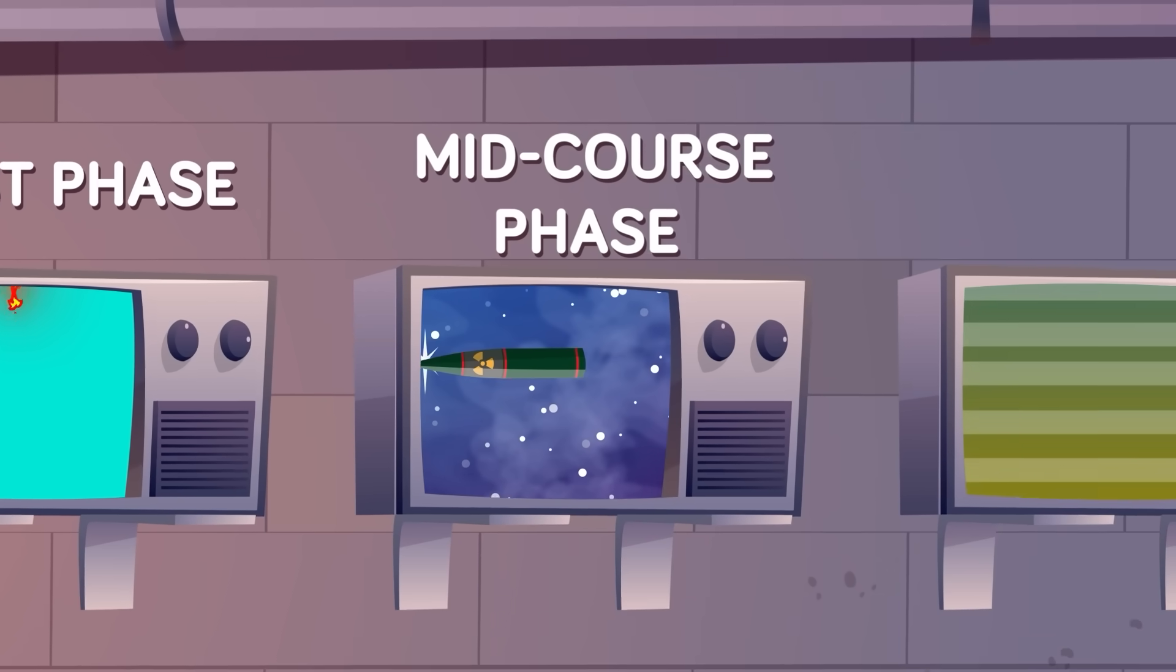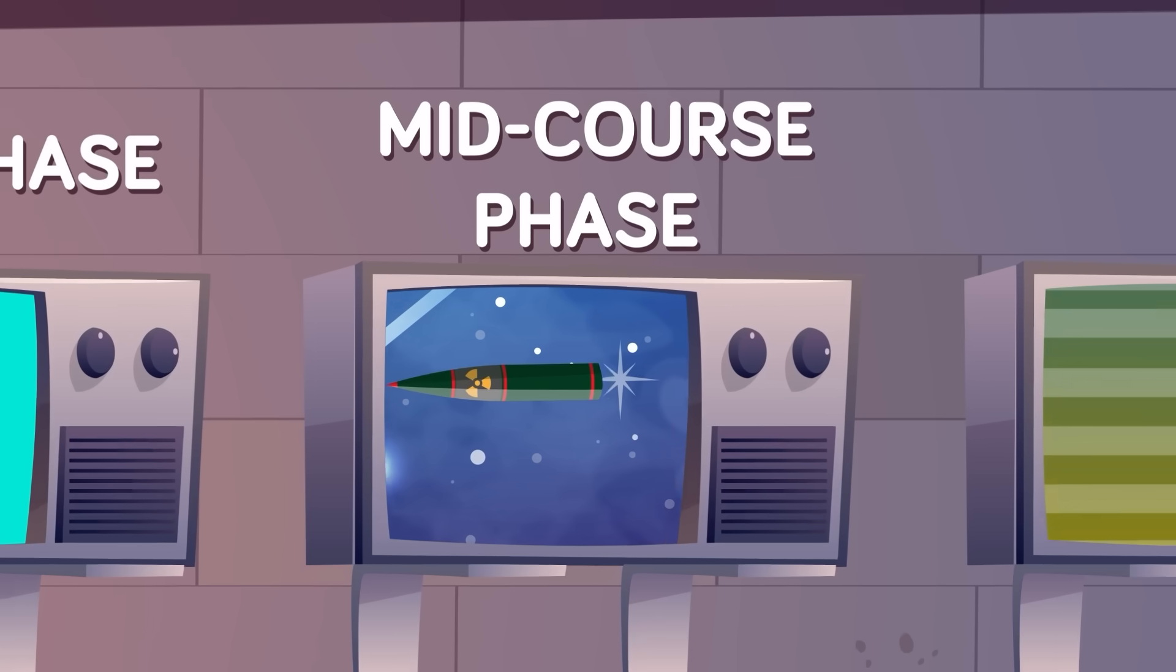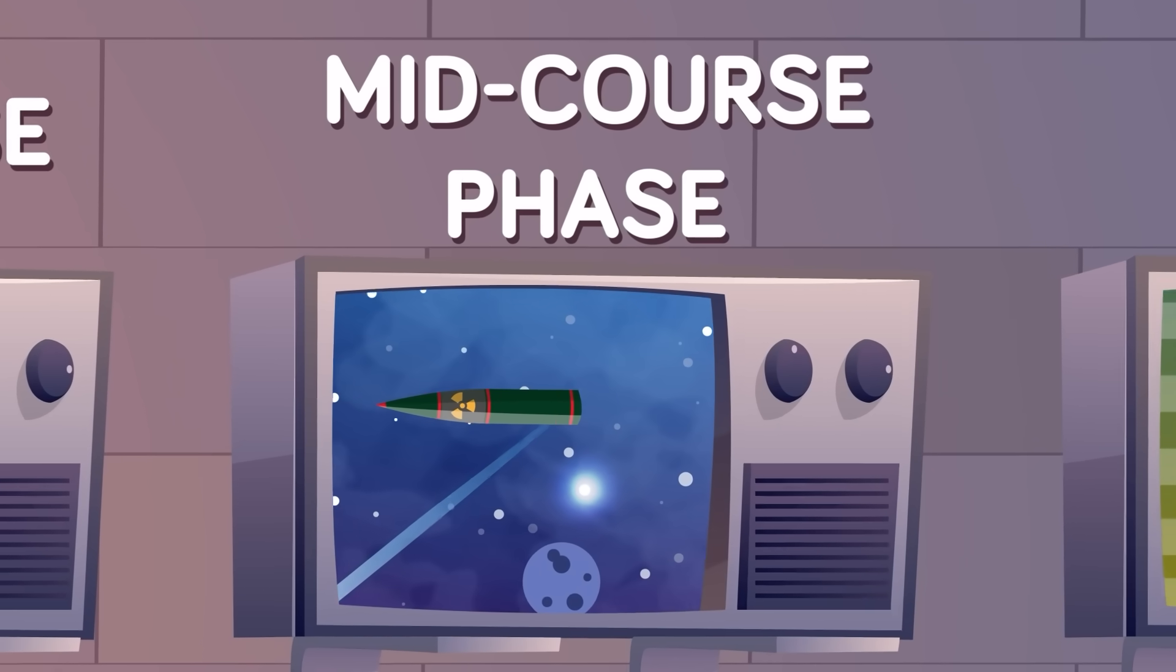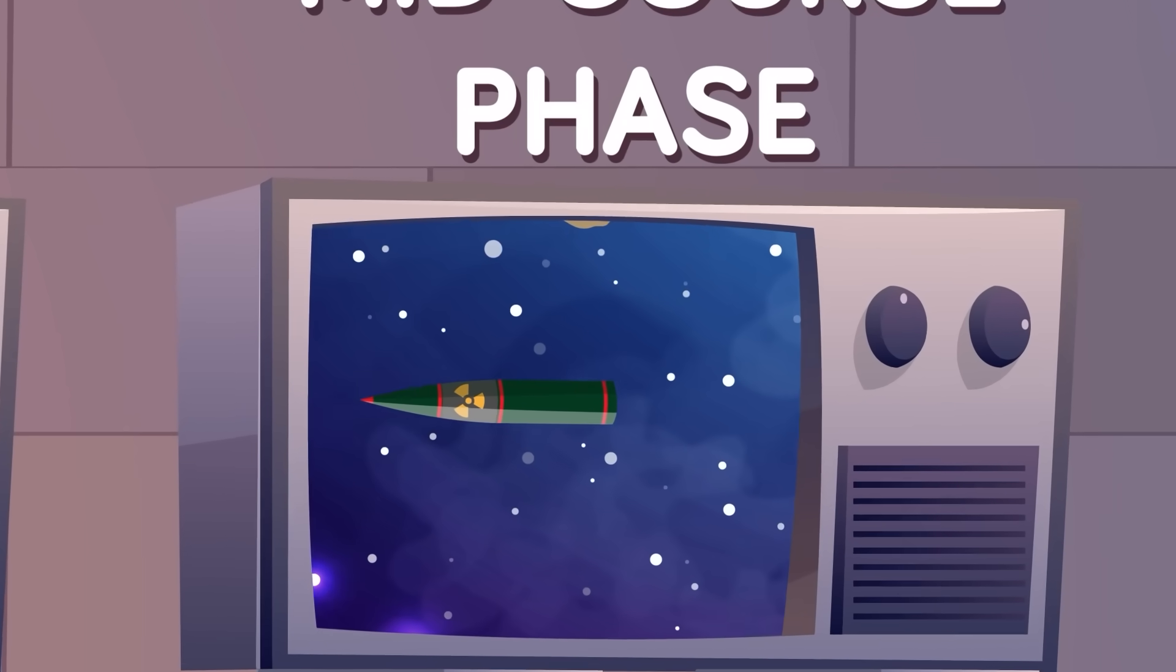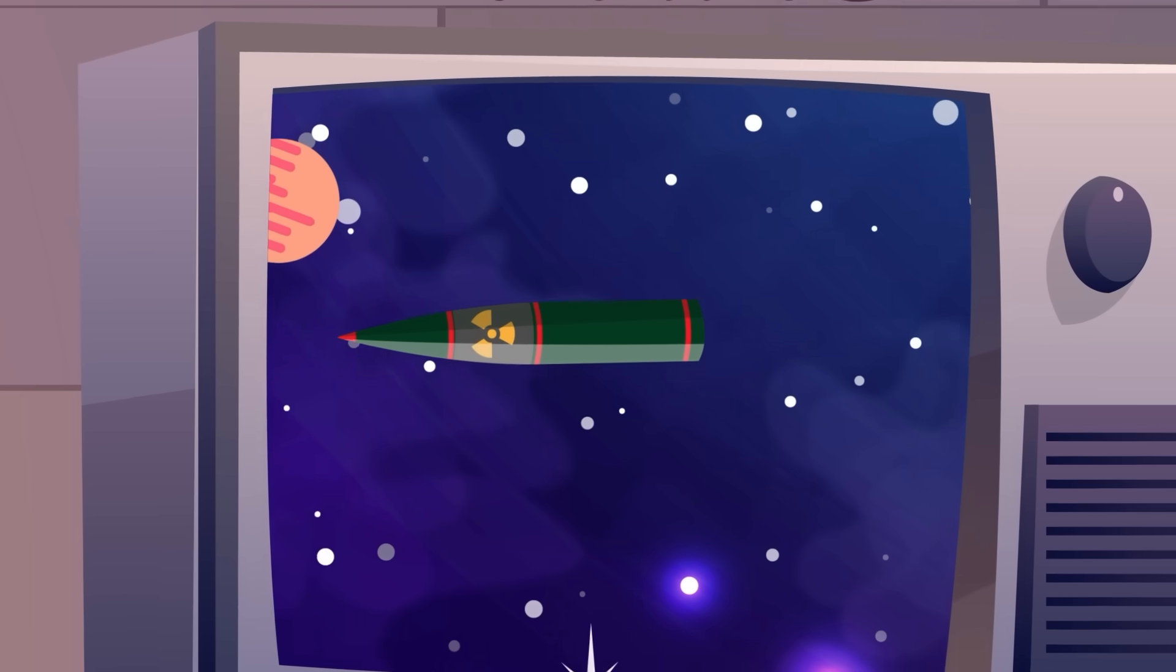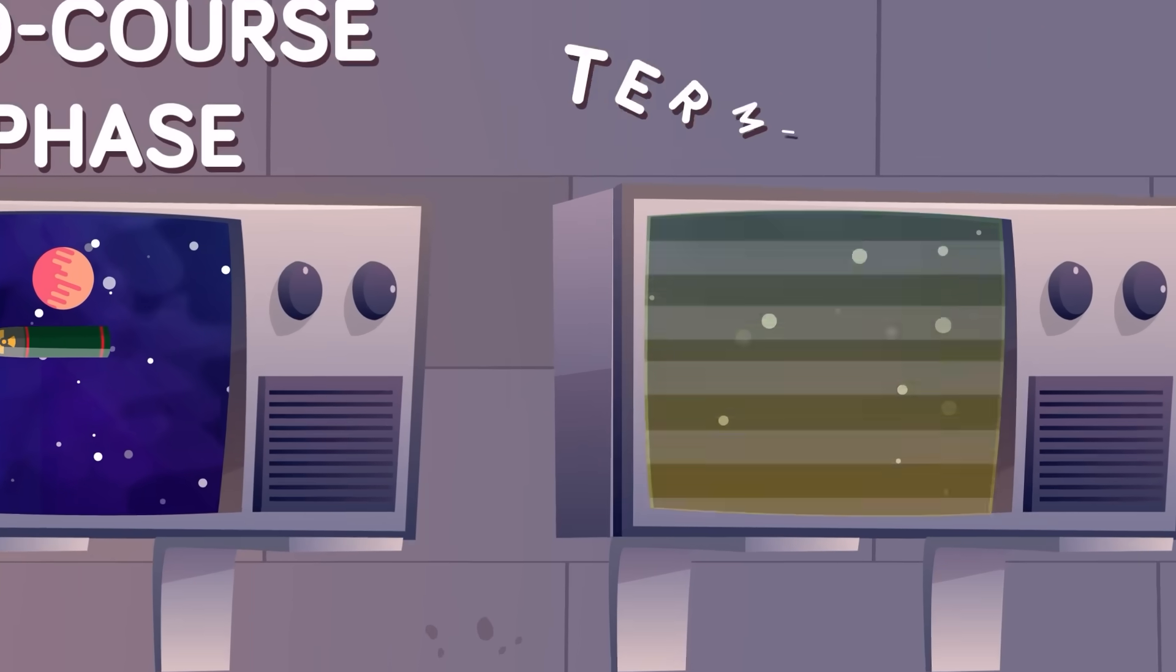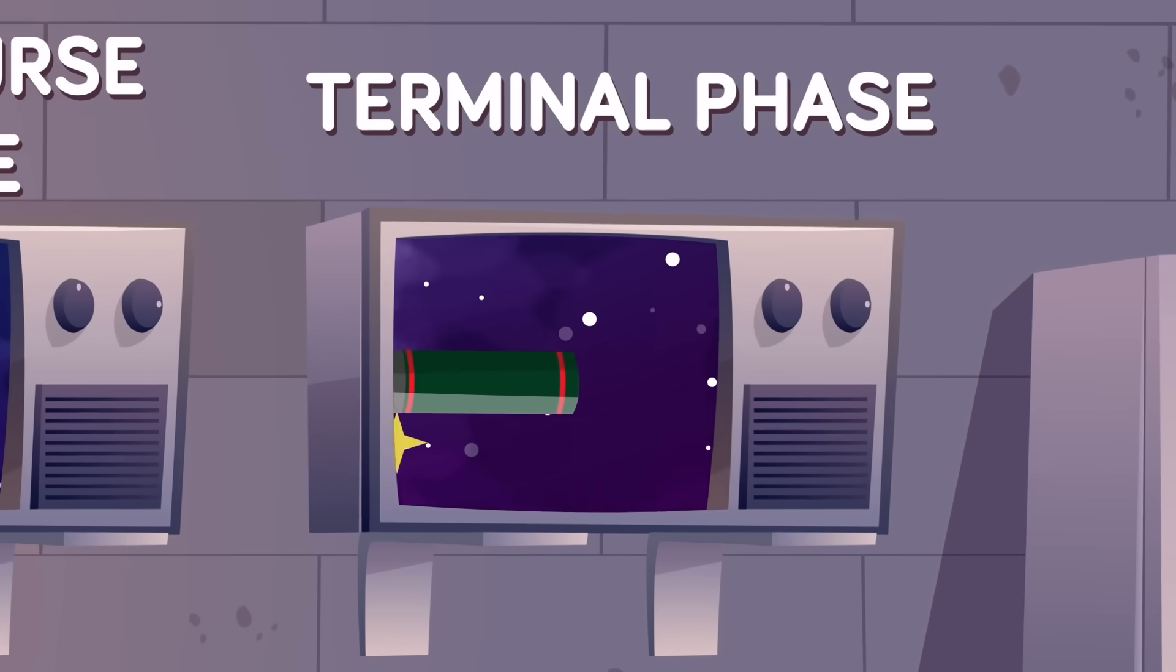The next phase is called the mid-course phase. The mid-course phase is the part of the flight path where ballistic missiles travel on a relatively steady plane. It's during this phase that the missile travels the bulk of the distance toward its target.